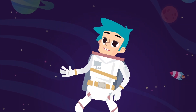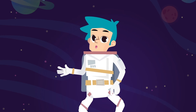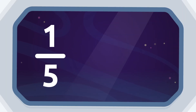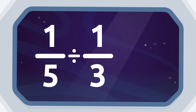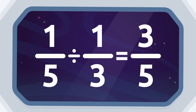Let's look at the next example — would you like to try doing this one yourself? One fifth divided by one third equals three fifths. Let's find out if you got it right: one fifth divided by one third equals three fifths.